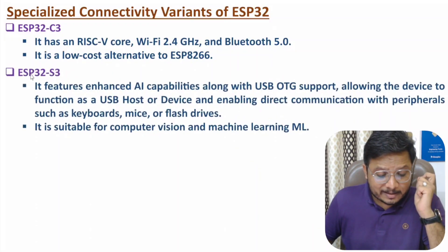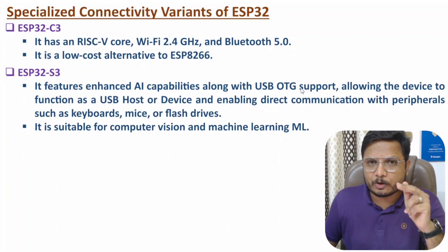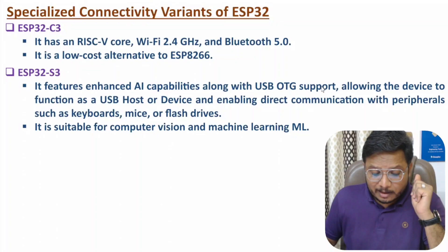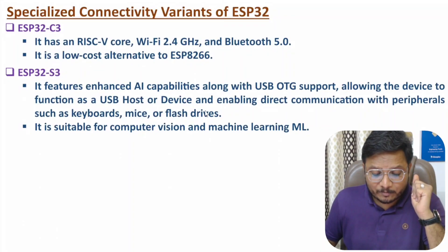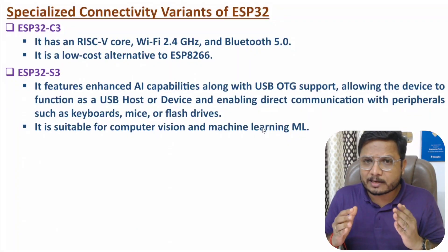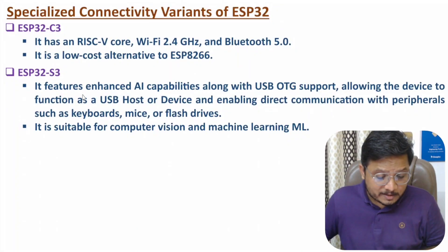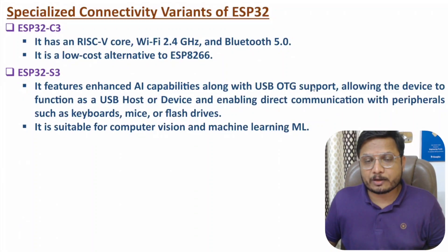The next variant is ESP32 S3. It has enhanced AI capabilities along with USB OTG support. With USB OTG support, the device can function as a USB host or device, which enables direct communication with peripherals such as keyboard, mice, or flash drive. It is also suitable for computer vision and machine learning. So if you want features based on AI and machine learning, then one can prefer ESP32 S3.